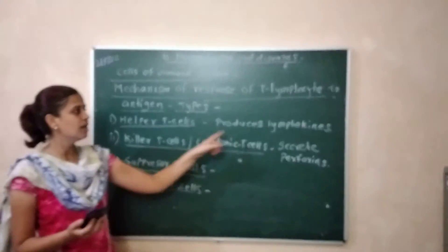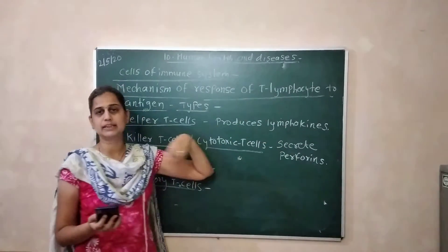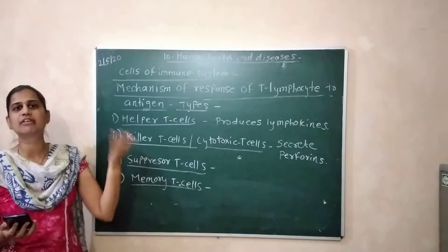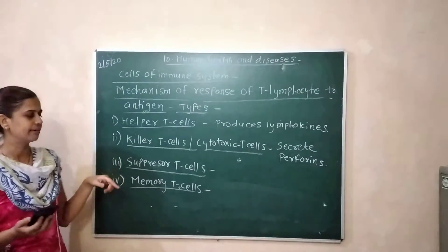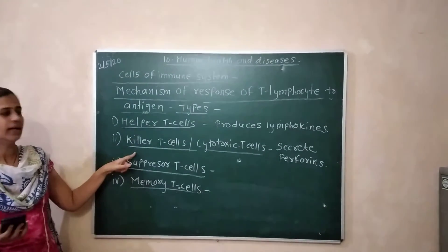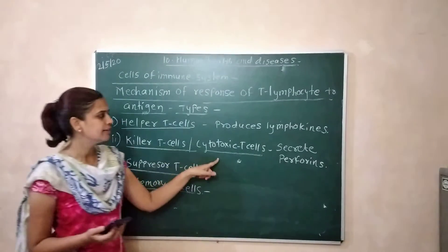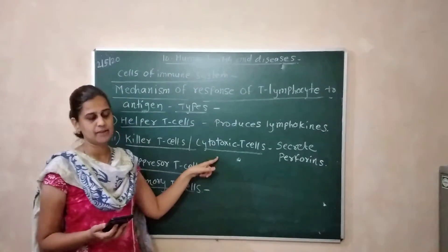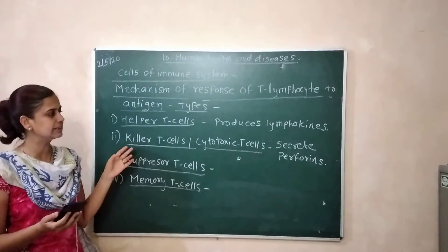Helper T-cells produce lymphokines and drive proliferation and stimulation of T-cells. The next type is killer T-cells, also known as cytotoxic T-cells.